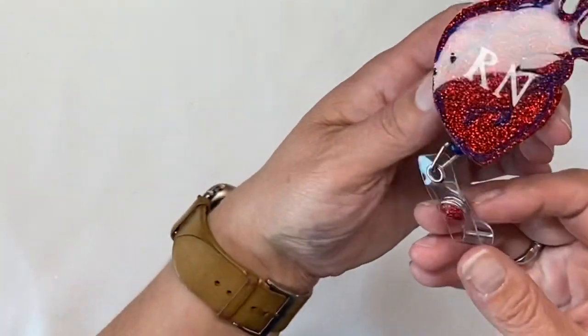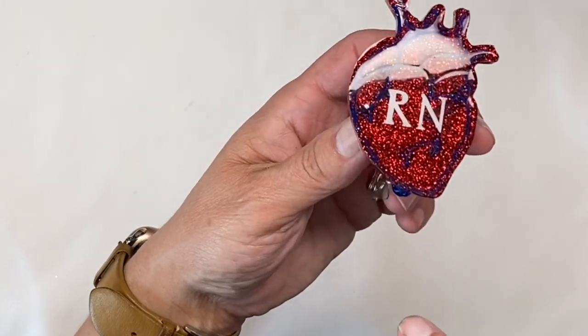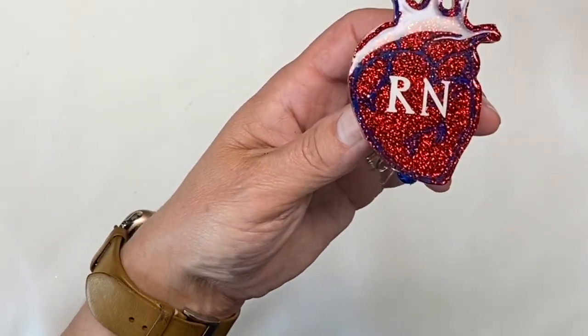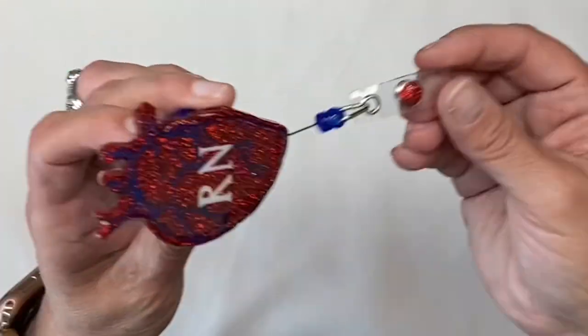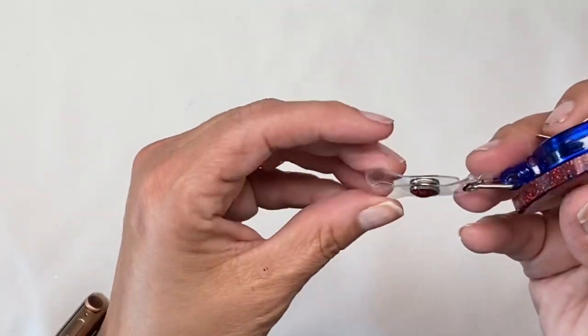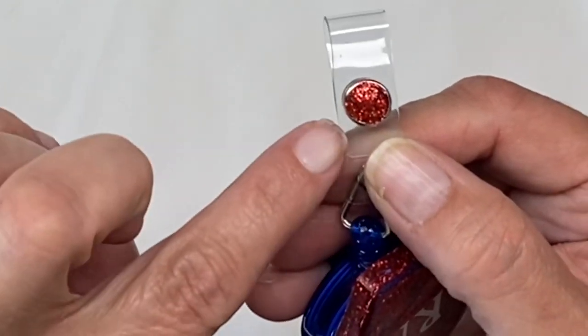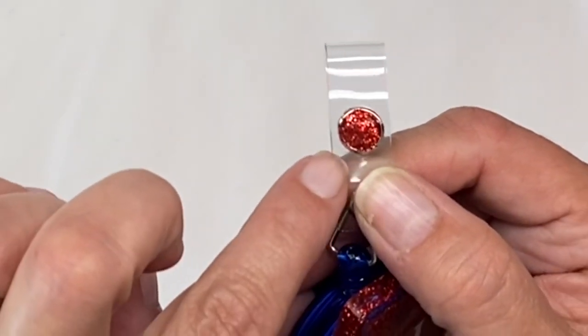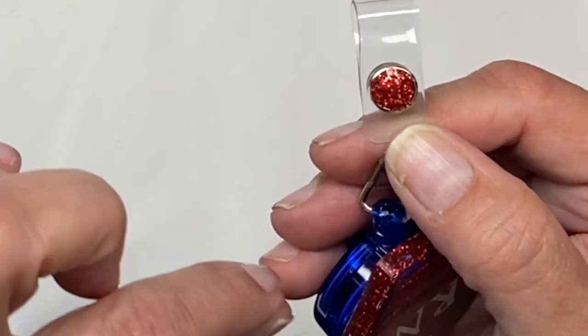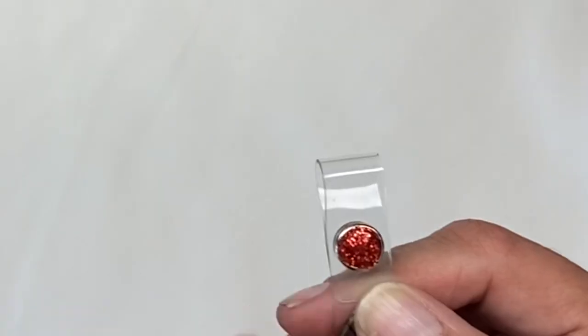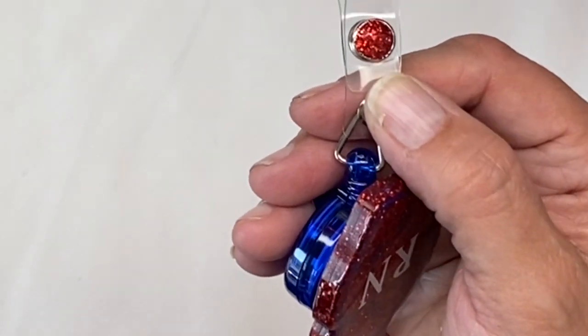But this is really adorable. Of course, I use my Cricut to do my decal to make my RN and super cute. Now for this little center here, I just put glitter with some resin. I like to use UV resin when I do this, just a tiny little bit. And I like that because I can put it underneath and I don't have to worry about it dripping.